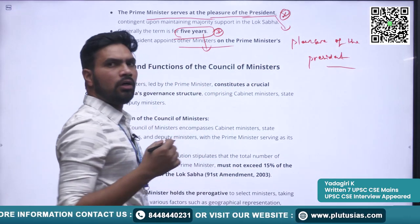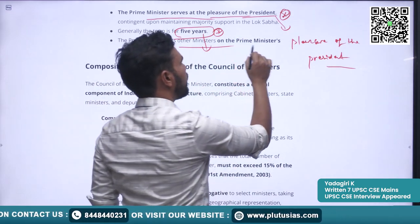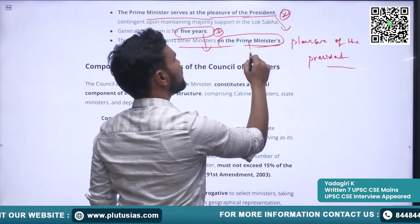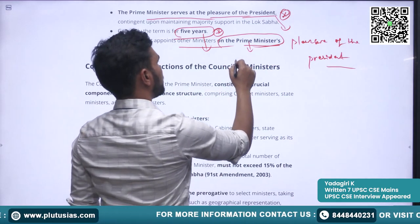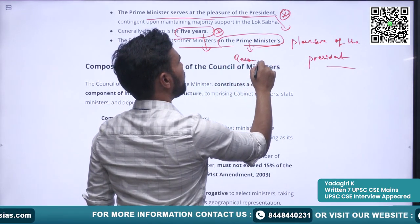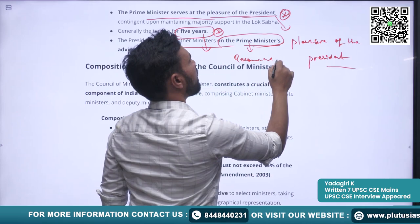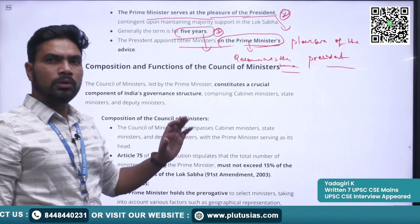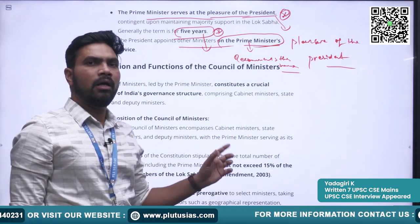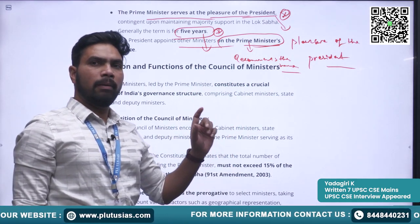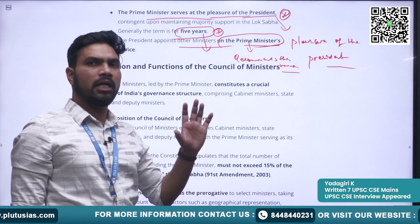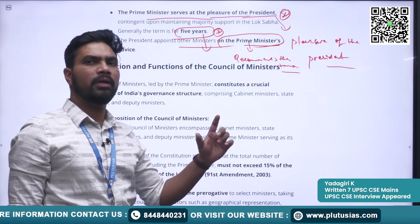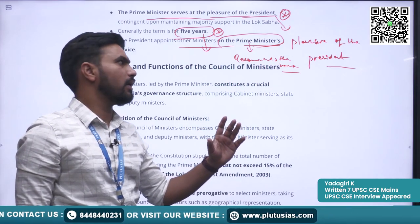When it comes to other Council of Ministers, they are appointed by the President, but the Prime Minister recommends the names. So the Prime Minister recommends the names of the Council of Ministers. The President appoints both the Prime Minister and the Council of Ministers, but the Council of Ministers are basically appointed from names recommended by the Prime Minister of India.